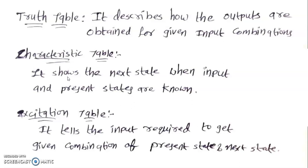That is, for these inputs and this present state, what is the next state output that will be obtained from this characteristic table.